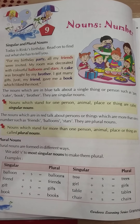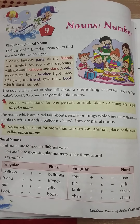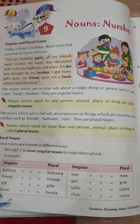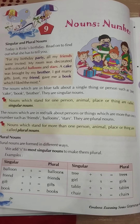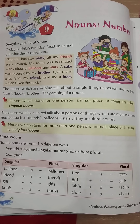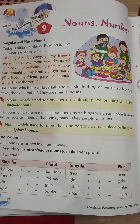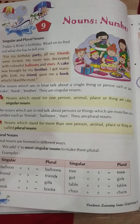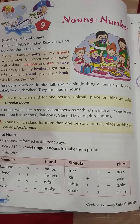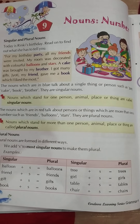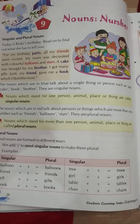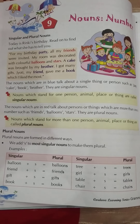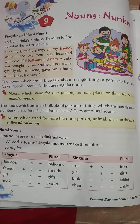See the definition of singular nouns: nouns which stand for one person, animal, place or thing are called a singular noun. Any name that is single — whether it is a person, animal, place or any thing — those are called singular nouns. You have to write this definition in your notebook.